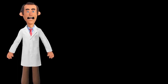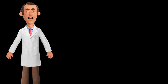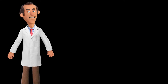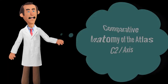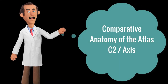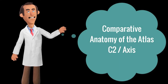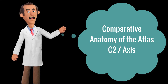Hello students and welcome back to another anatomy video. After we described the atlas, the first cervical vertebra, let's move and talk about the axis and look at the comparative anatomy of this vertebra between the different animal species. So let's get started.